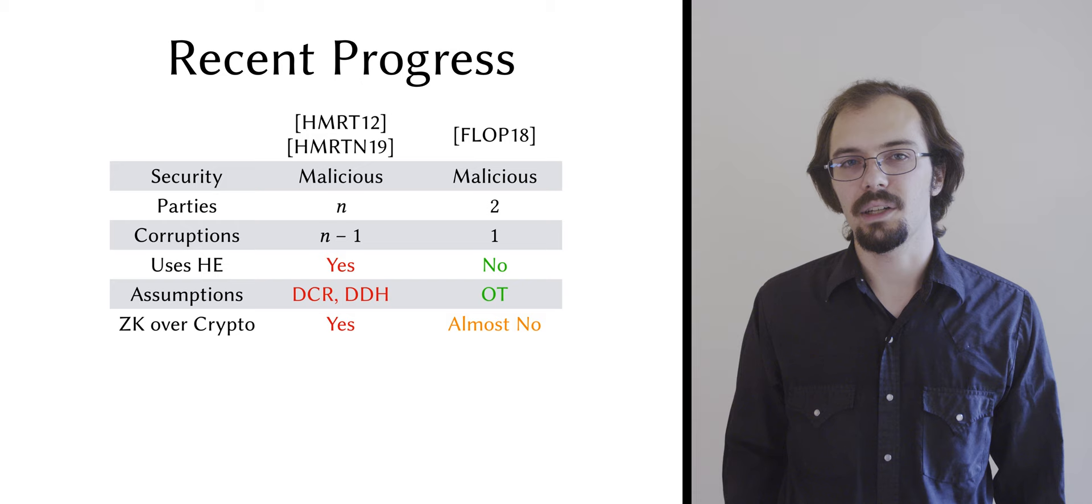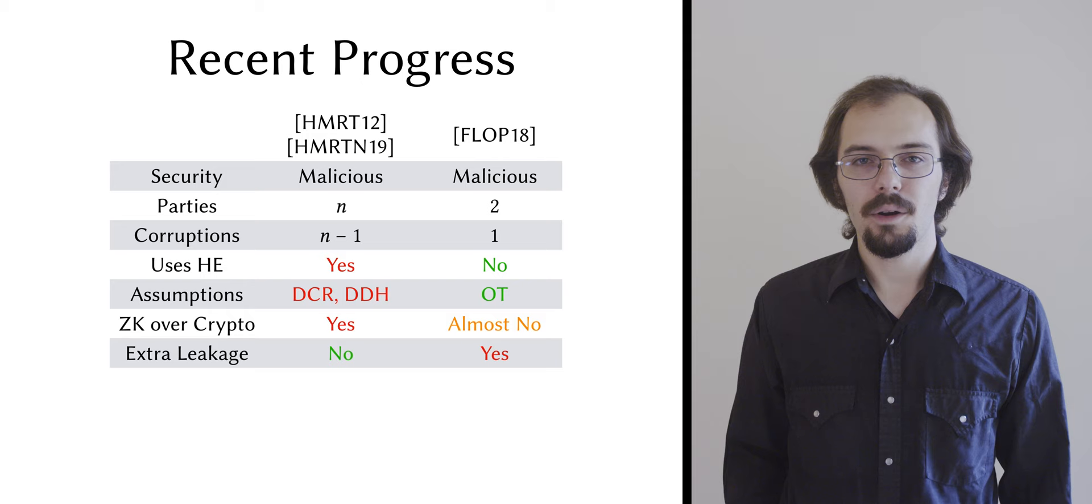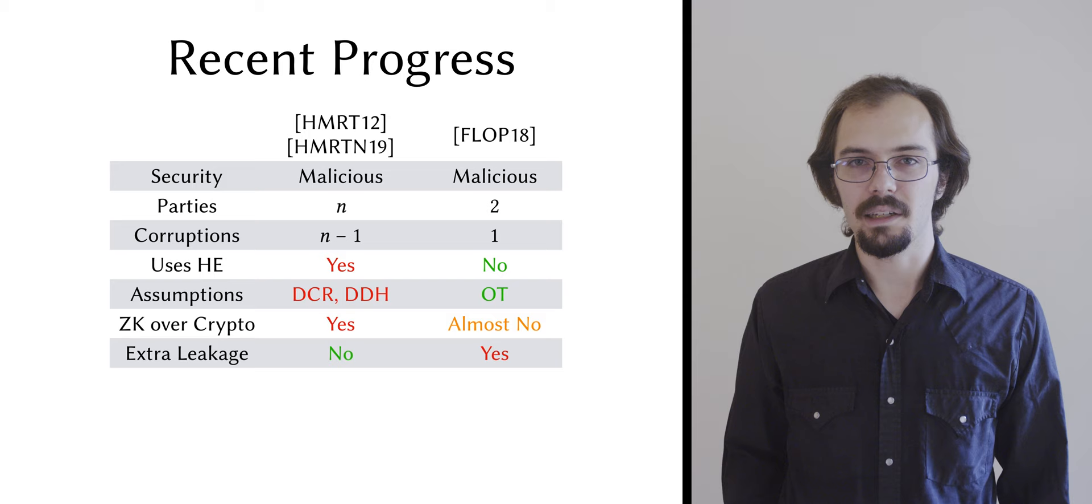On the other hand, their OT-based trial division method leaks some bits of the candidate primes. This is selective leakage on the part of an adversary, and not merely a natural byproduct of using integer shares.